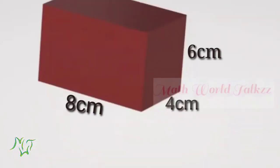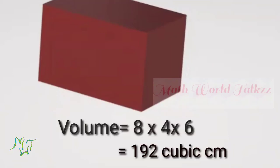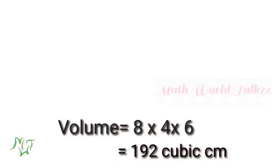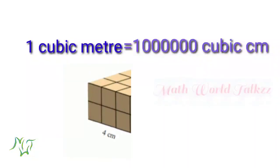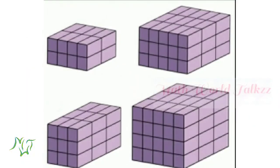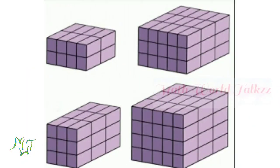Volume is measured in cubic units. The volume of this rectangular block is 8 into 4 into 6, that is equal to 192 cubic centimeters. Do you know what is one cubic meter? One cubic meter is same as 10 lakh cubic centimeters.